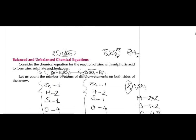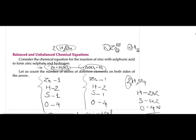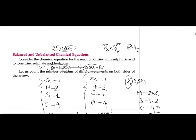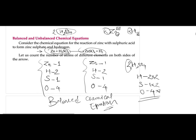Then we studied balancing chemical equations. The equation must be balanced in order to comply with the law of conservation of mass. We studied one balanced equation: zinc plus sulfuric acid gives zinc sulfate plus hydrogen.